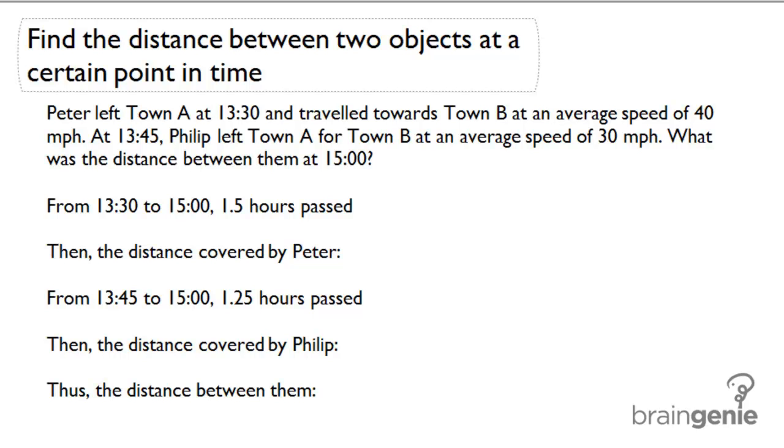Find the distance between two objects at a certain point in time. Peter left town A at 13:30 and traveled toward town B at an average speed of 40 miles per hour.